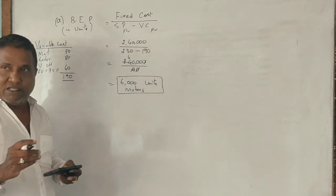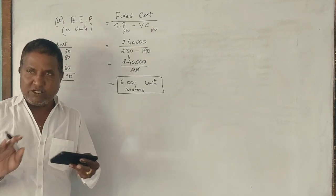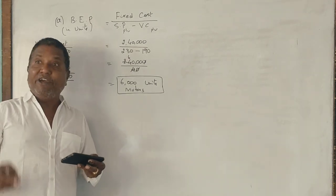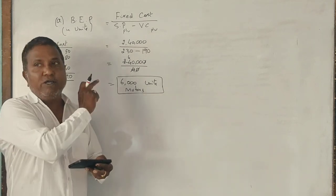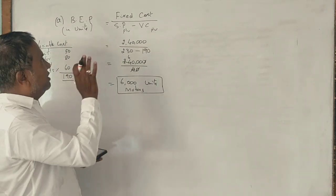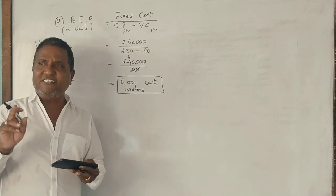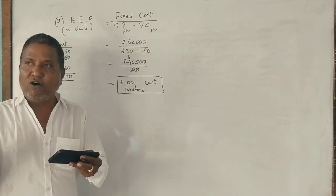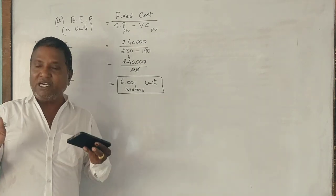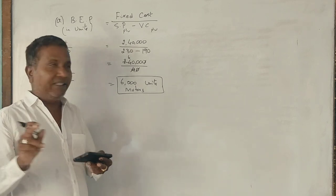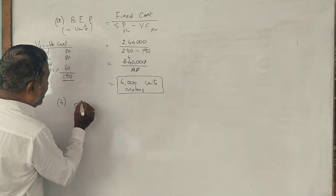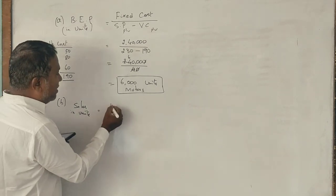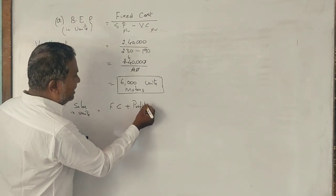The formula is fixed cost plus profit divided by selling price minus variable cost per unit. The question is, how many motors to be sold to make a profit of 1 lakh rupees?